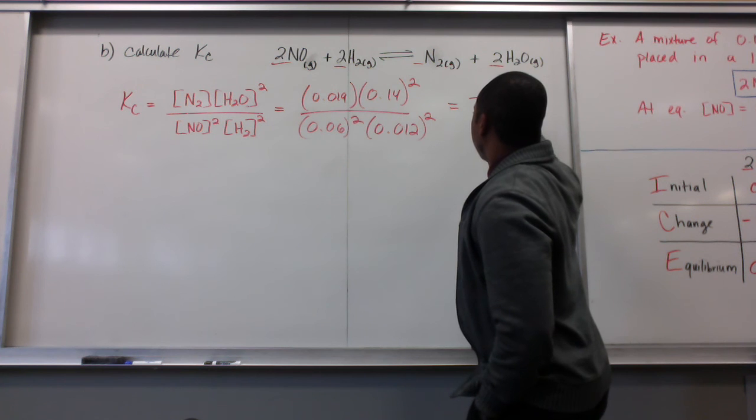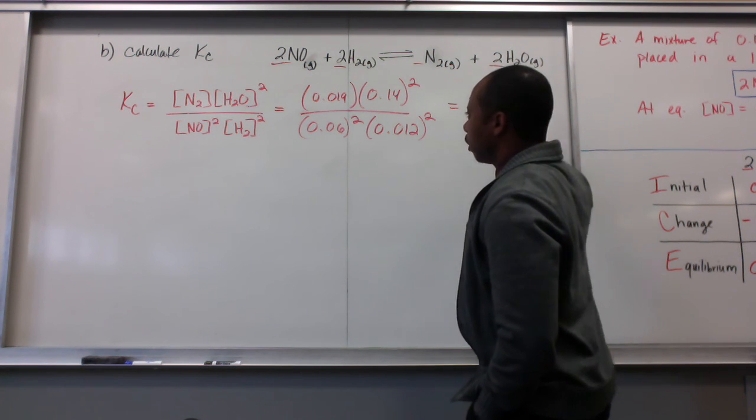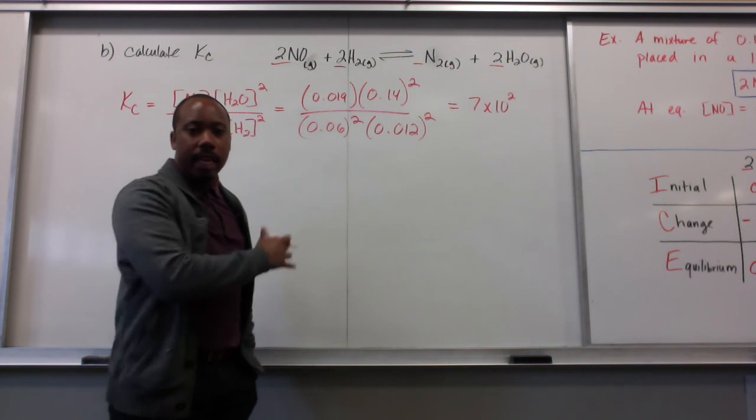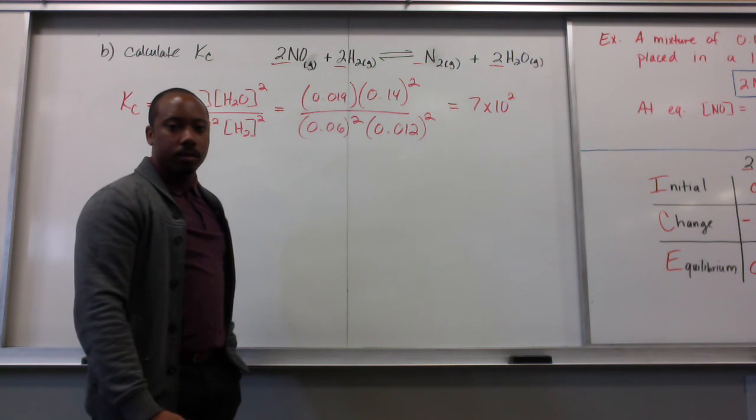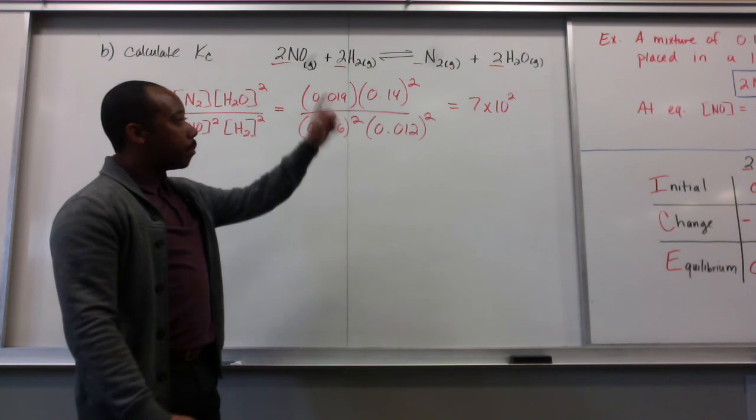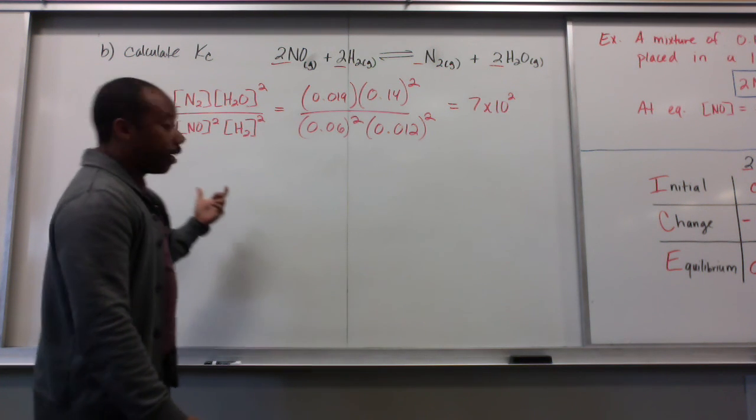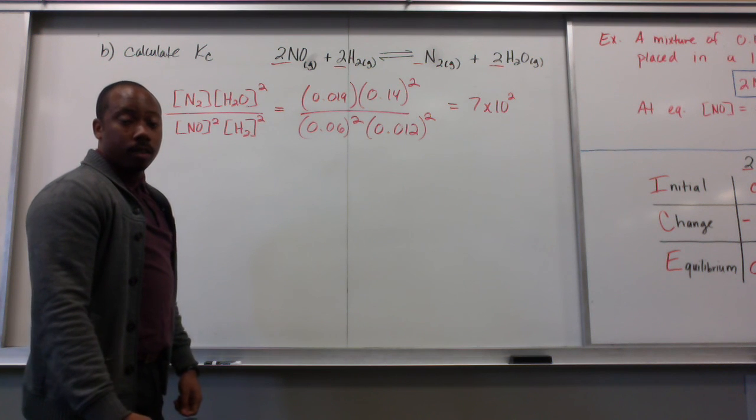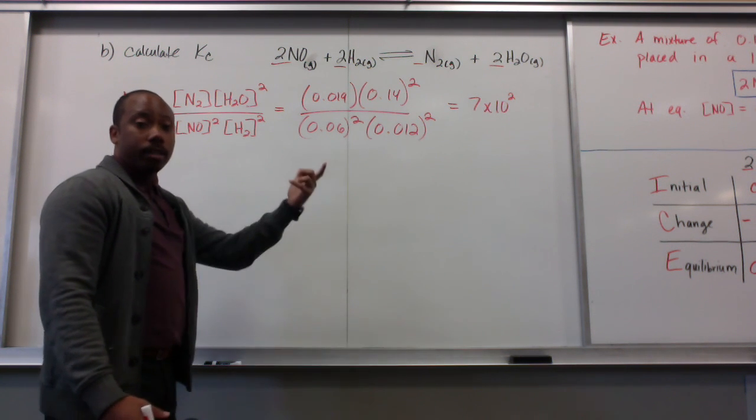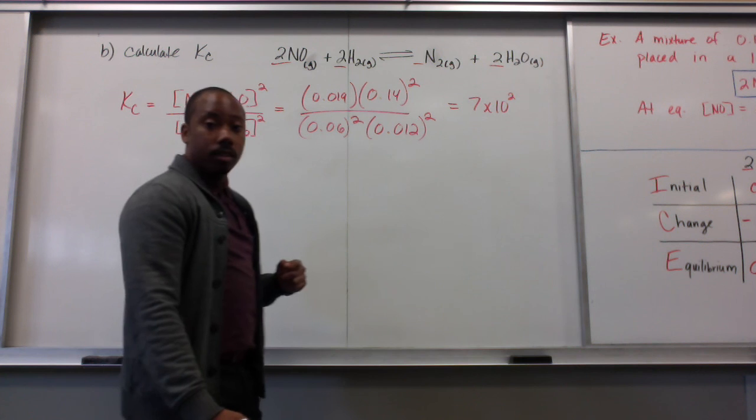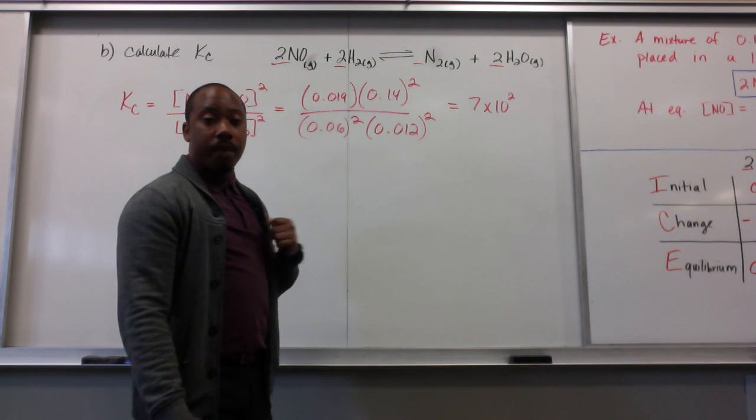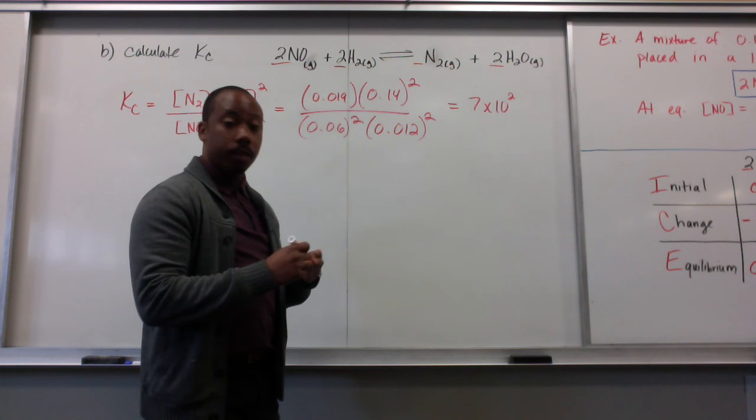When we simplify this, we get about 7 times 10 to the second and our units really don't matter for this Kc value. So, we get 7 times 10 to the second and that is our equilibrium expression constant. This number is quite a bit above 1, 700, so we know that the products have been favored in this reaction more than the reactants.